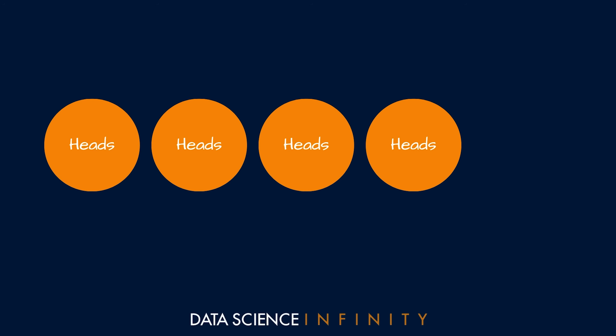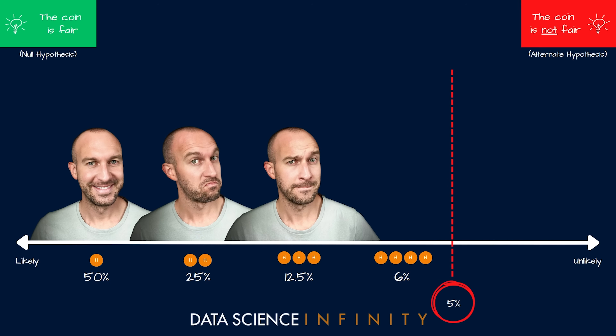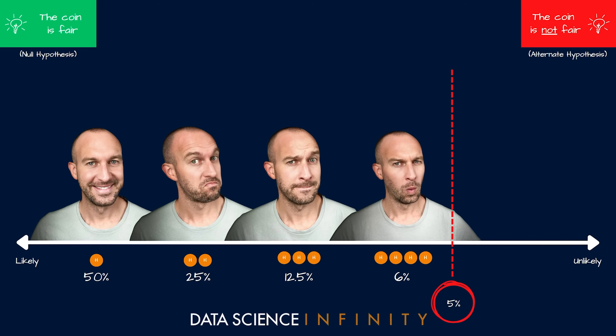Then Pete flips another head — four in a row. This is becoming much less likely. If the coin is truly fair, we should only see this around six percent of the time. By our own rules we're still giving Pete the benefit of the doubt, but this has more than likely piqued our interest.